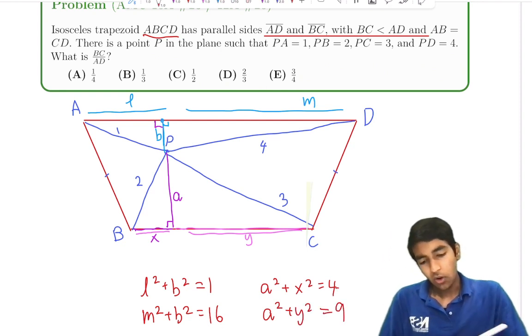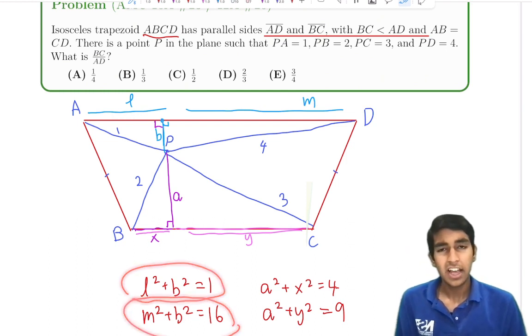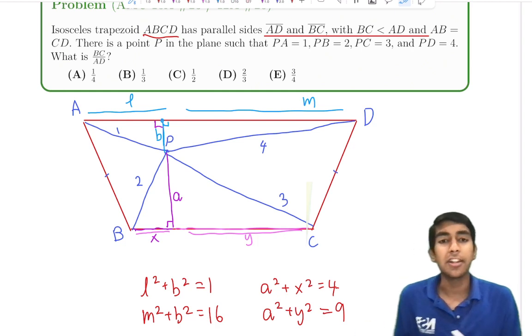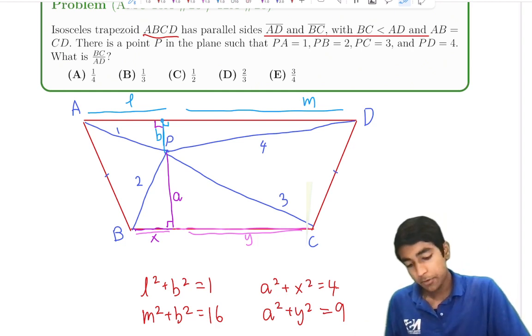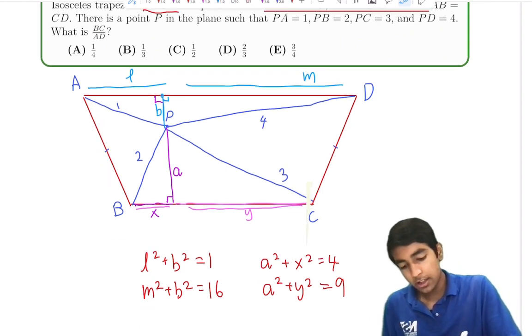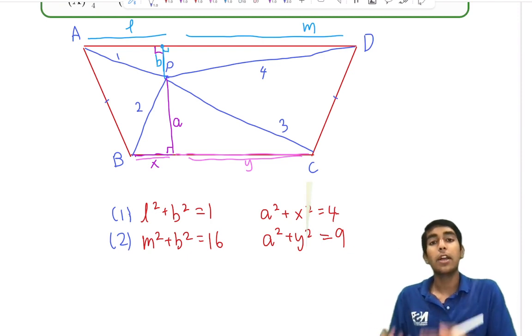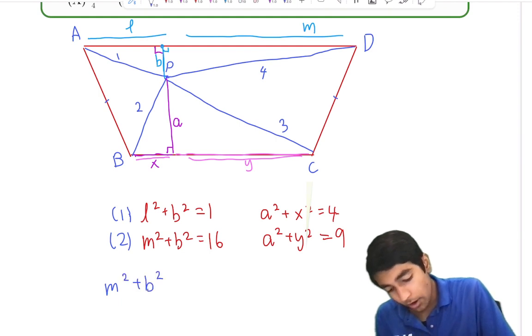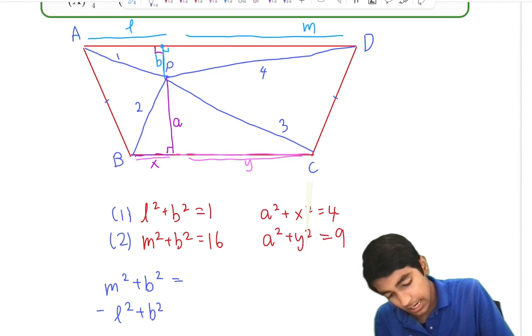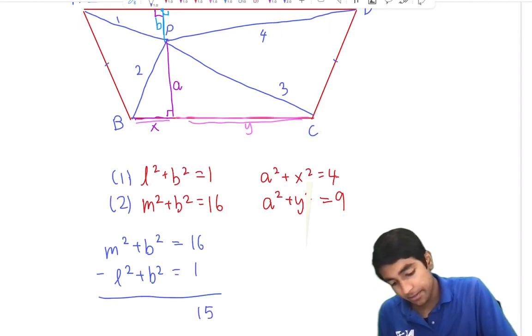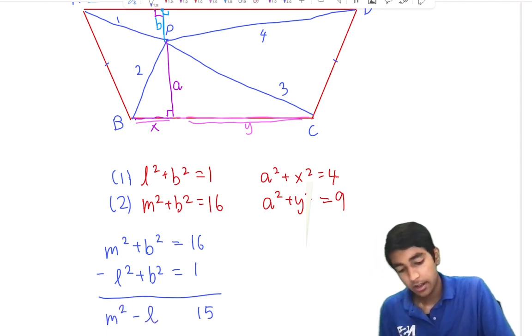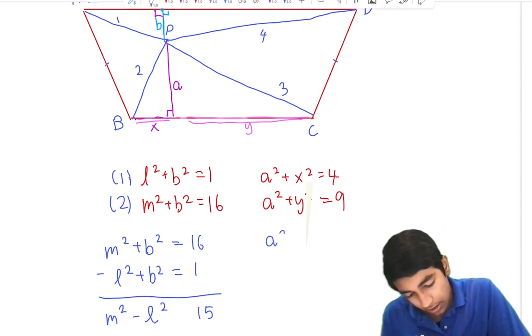Do you notice anything about these equations? They look very, very similar. L squared plus B squared is 1, M squared plus B squared is 16. What's the only thing different about those equations? M squared, L squared. So what we can do is subtract equation 1 from equation 2. M squared plus B squared minus L squared plus B squared equals 16 minus 1, which is 15. On the left-hand side, we have M squared minus L squared because the B squared will cancel. Similarly, we can do A squared plus Y squared equals 9 minus A squared plus X squared is 4. We get Y squared minus X squared is 5.